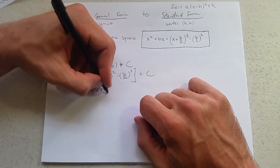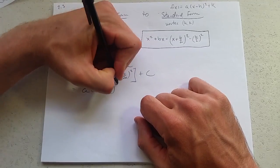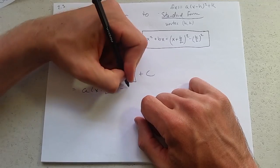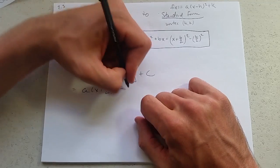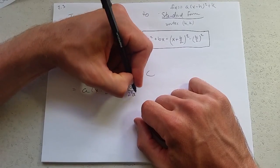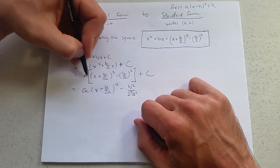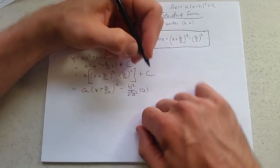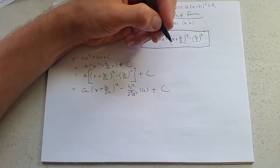x plus b over 2a squared minus, I'm going to distribute the square into every piece here, b squared over 2 squared, a squared, and then multiply by another a, and bring down that plus c.